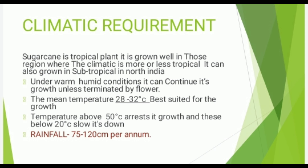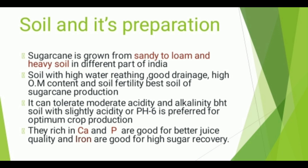Soil and Its Preparation: Sugarcane is grown from sandy to heavy soil in different parts of India. Soil with good water retention, good drainage, high organic matter content, and soil fertility are the best soil types for sugarcane production. It can tolerate moderate acidity and alkalinity, but soil with slight acidity having pH 6 is preferred for optimum crop production. Soils rich in calcium and potassium are good for better juice quality and lodging resistance; soils rich in iron are good for higher sugar recovery.